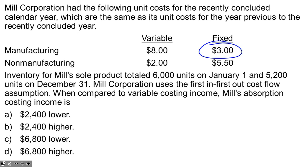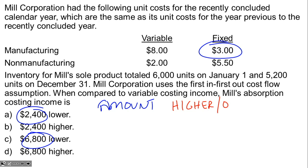Inventory for Mill's sold product totaled 6,000 units on January 1st and 5,200 units on December 31st. Mill Corporation uses the FIFO cost flow assumption. Compared to variable costing income, Mill's absorption costing income is how much higher or lower? We essentially have two decisions: determine the amount — either $2,400 or $6,800 — and then determine whether it is higher or lower.